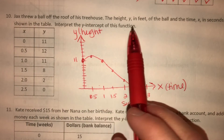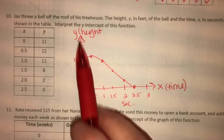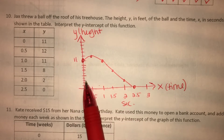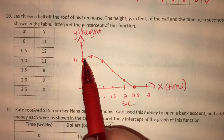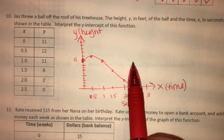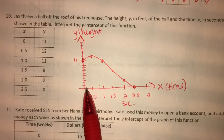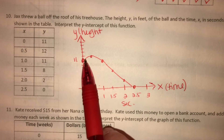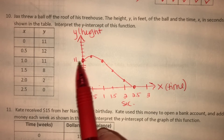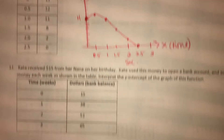It says interpret the y-intercept of this function. The y-intercept is where the ball starts — before any time has passed, where does the ball start? It doesn't start on the ground; he's standing on top of the treehouse. So he's about 11 feet up.